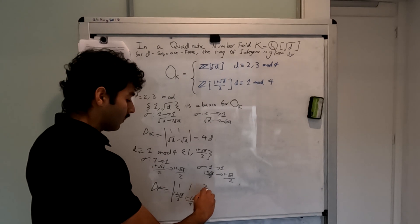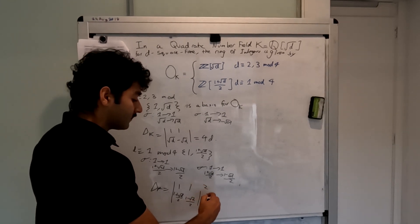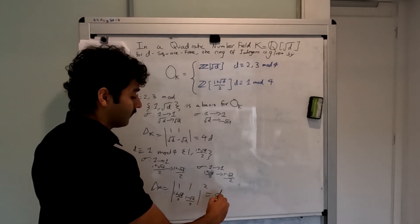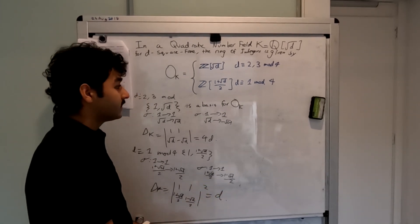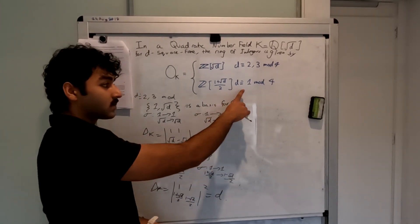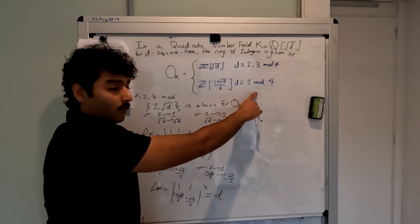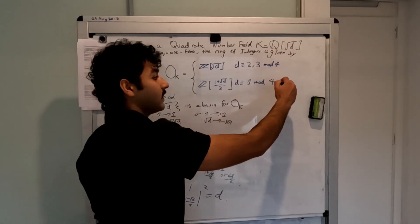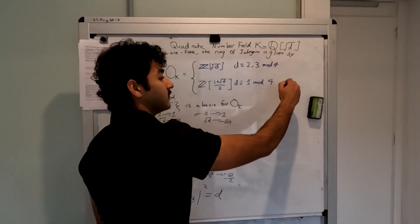Which gives us d. Hence, when d is congruent to 1 mod 4, the discriminant is equal to d.